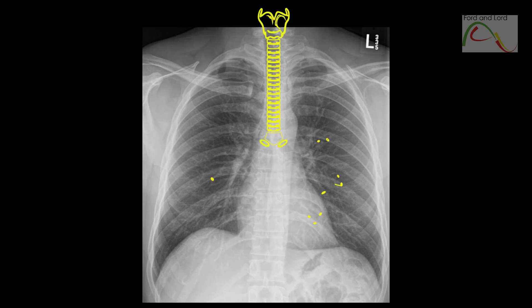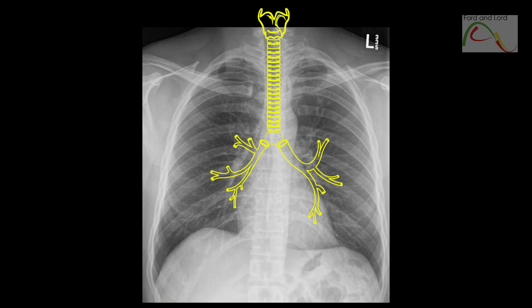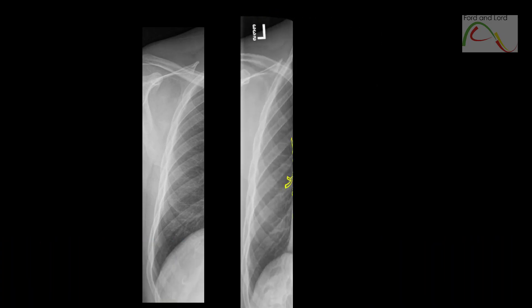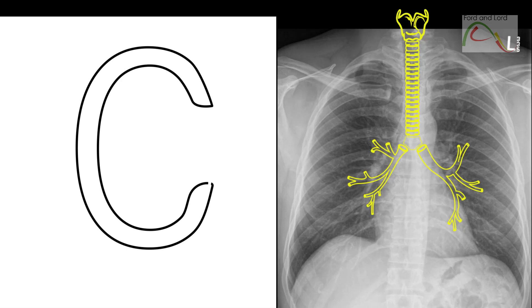The trachea is the largest airway. It extends from the inferior end of the larynx at the level of the 6th cervical vertebra into the thorax, and terminates at the level of the sternal angle, or at the level of the 4th to 5th thoracic vertebra. In adults, the trachea is approximately 2.5 cm in diameter and 12 cm in length.